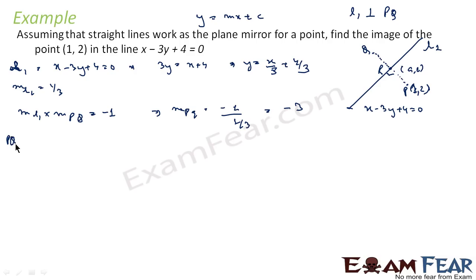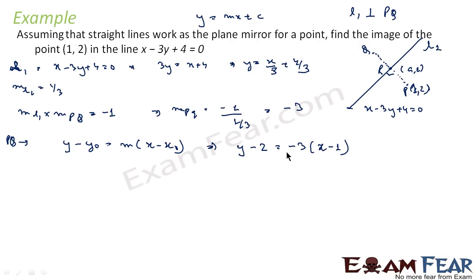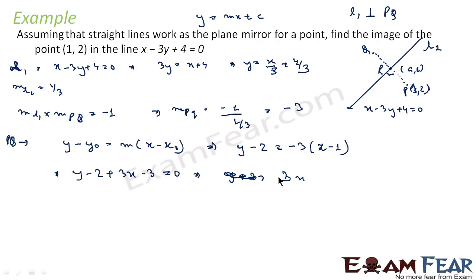Now we can find the equation of PQ. PQ equation: y minus y-naught is equal to m into x minus x-naught. This turns out to be y minus 2 is equal to minus 3 into x minus 1. That gives us y minus 2 plus 3x minus 3 is equal to 0, or 3x plus y minus 5 is equal to 0. This is the equation of line PQ.